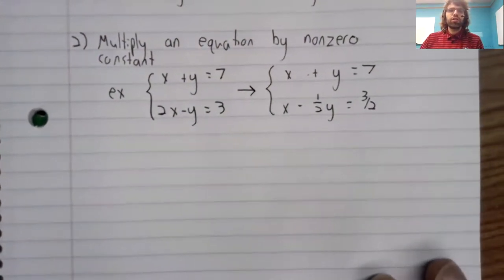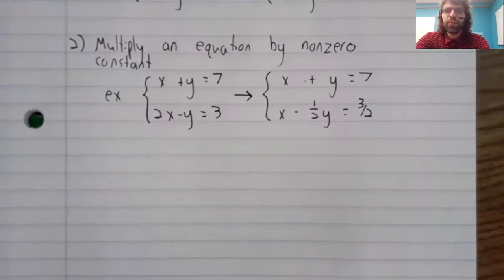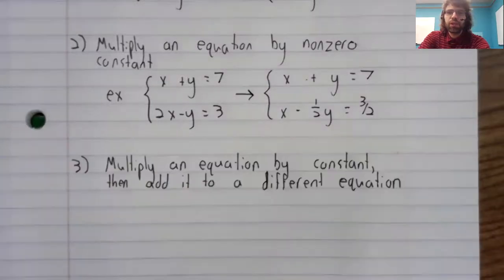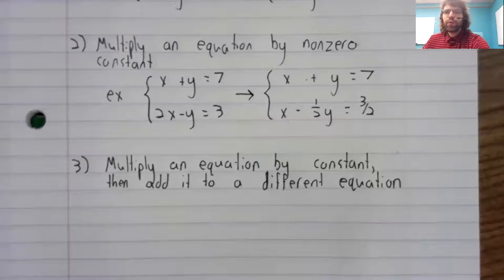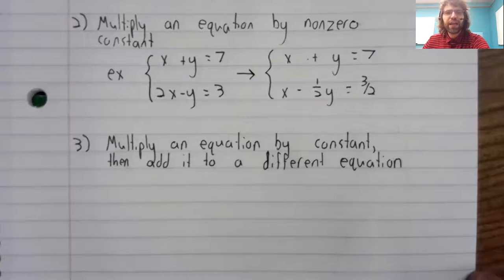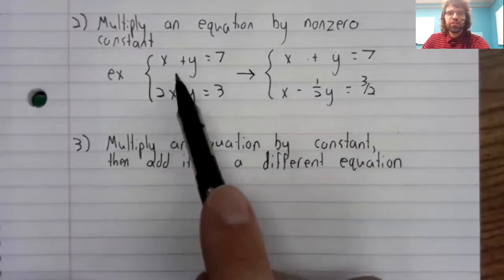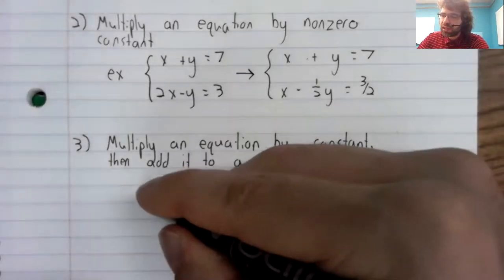The third thing that we can do to a system that will not change its solution set is a little more complicated. We can multiply an equation by a constant and then add that result to a different equation. Let's keep with this same example.